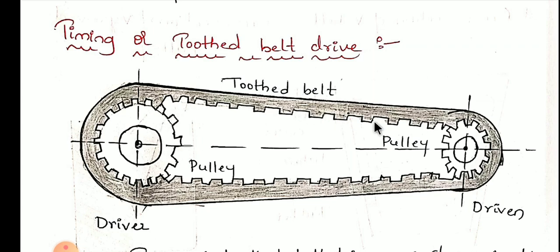When correctly tensioned between the pulleys, this type of belt has no slip — almost 99.99% no slippage. As such, it is used to transfer motion for indexing or for timing purposes, and hence the name timing belt drive.